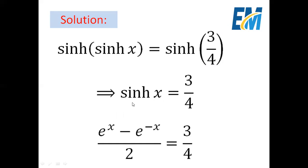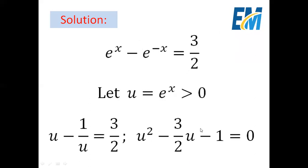We know that sinh(x) = (e^x minus e^(-x)) / 2. Therefore our equation becomes (e^x minus e^(-x)) / 2 = 3/4. Multiplying the whole equation by 2 gives e^x minus e^(-x) = 3/2.